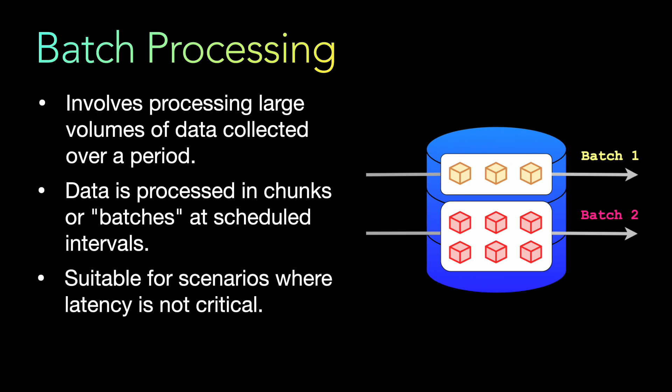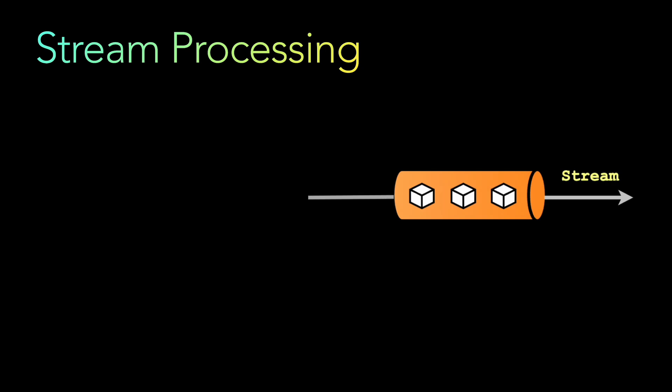Batch processing is suitable for scenarios where latency is not critical, because processing a batch of data can take time. Where latency is not a critical requirement, batch processing is a suitable option. Next is stream processing — stream processing involves a stream of data that is being processed continuously.